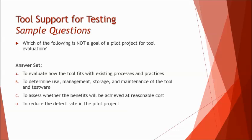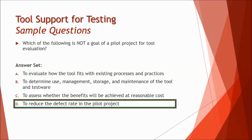Option D: to reduce the defect rate in the pilot project — we do not have any objective in a pilot project to reduce the defect rate. The pilot project is all about tool evaluation and measuring tool effectiveness, but has nothing to do with defect rate reduction. You might get confused with chapter one where we say it's always about reducing or preventing defects, but pilot projects are specific to tool evaluation. So D is the right answer.